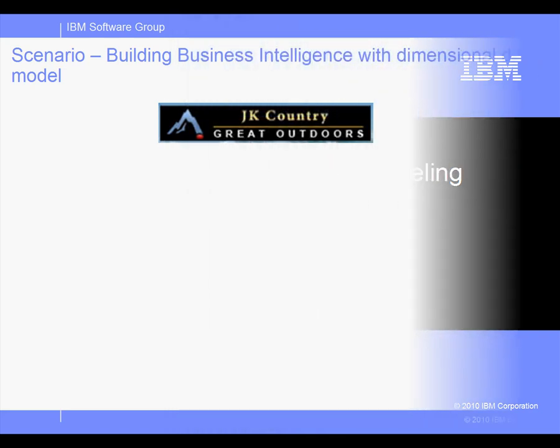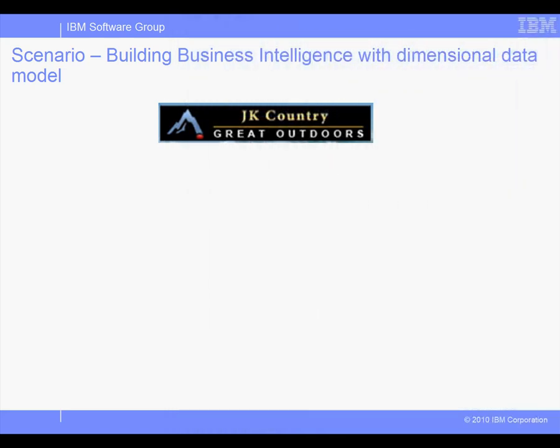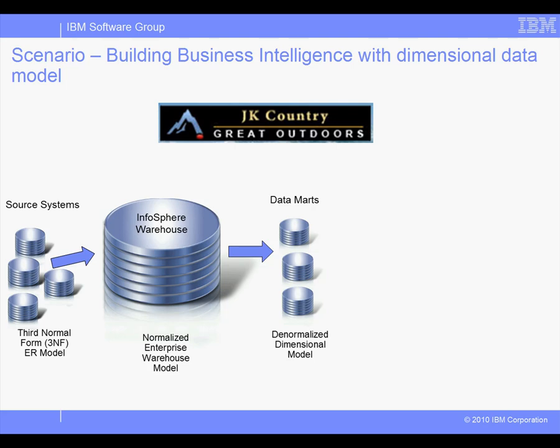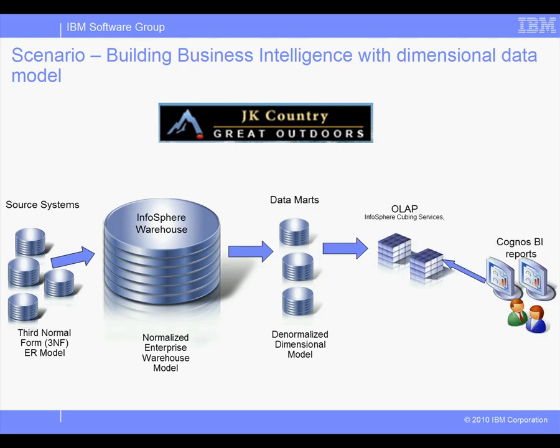Let's start by visiting The Great Outdoors Company, an online retailer that sells sport and outdoor products. To grow their business, the management team decides to build a data mart for business intelligence analysis and performance management. The data mart will be derived from a partition of the existing data warehouse, used by the Cubing Services component of Infosphere Warehouse to build OLAP queries, and by Cognos Business Intelligence to generate analytical reports. Tom, the data architect at The Great Outdoors Company, is assigned to create the dimensional models for the OLAP and BI report teams.